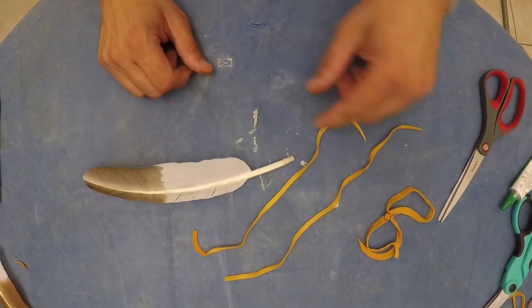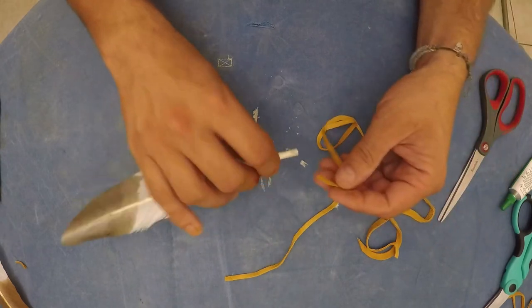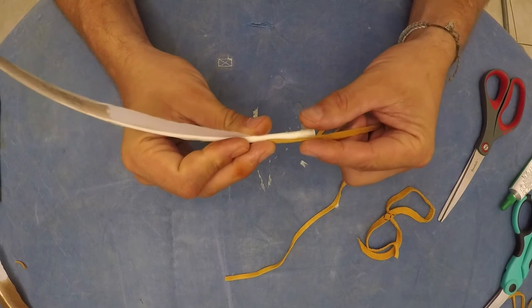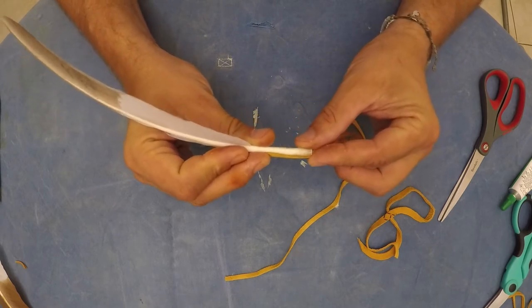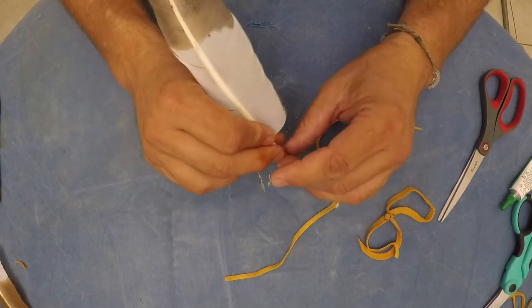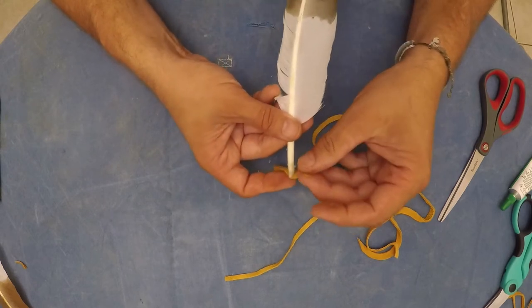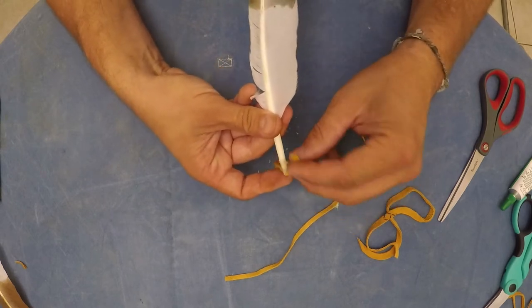Next you want to take one of the thinner strips of leather and hold it along one side of the quill to measure how much you'll be gluing down. In the next step you'll be using the glue to adhere the leather to the quill. If you are concerned with accidental skin contact with the glue, then you may want to wear a pair of protective surgical gloves for the next few steps of wrapping the leather on the feather.